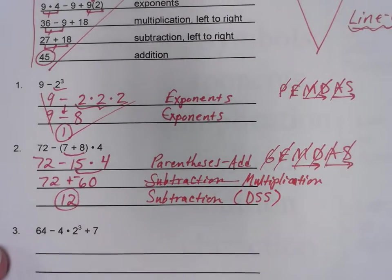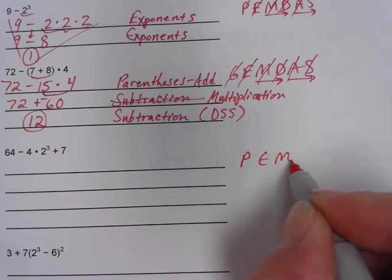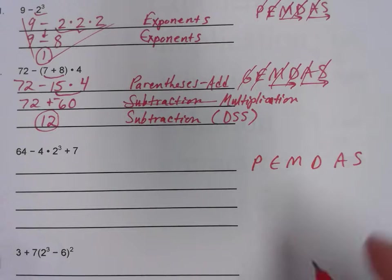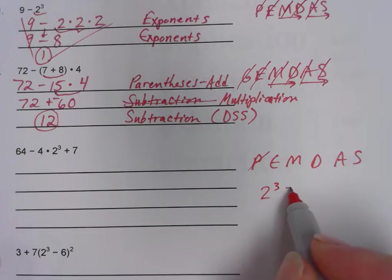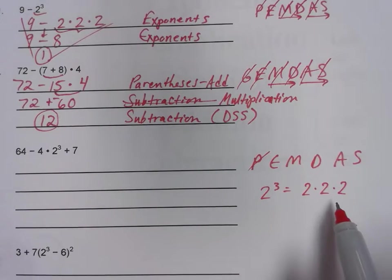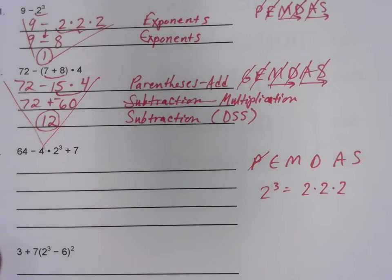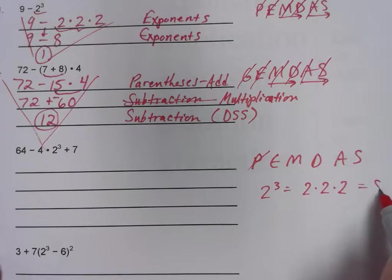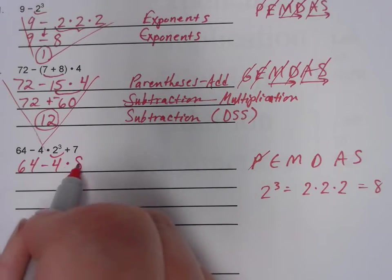Let's take a look at number three. I'm going to jot down PEMDAS as a quick reminder of my order of operations steps. Are there any parentheses? No. Are there any exponents? Yes. So I'm going to show 2 to the third power really means two times two times two — I'm writing this off to the side so I don't ruin my beautiful pizza. Two times two is four, times two again is eight. I'm going to take this 2 to the third and replace it with an eight.